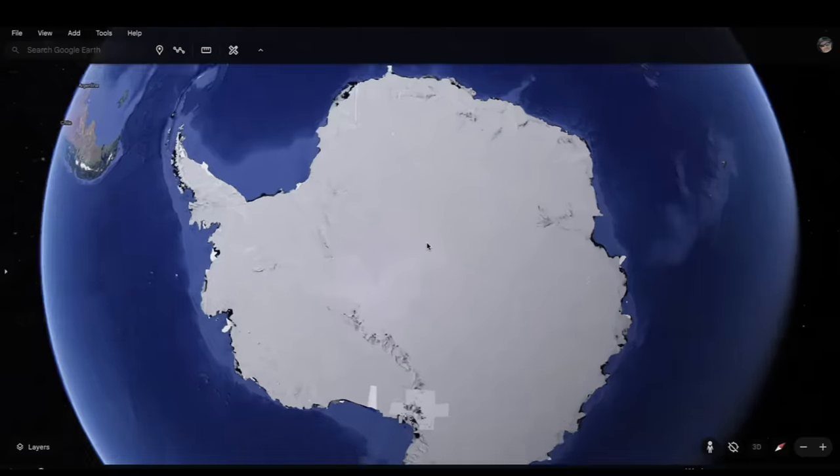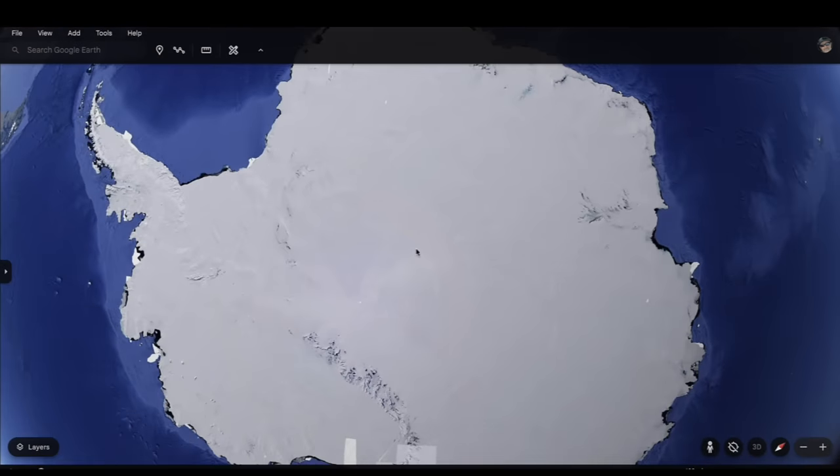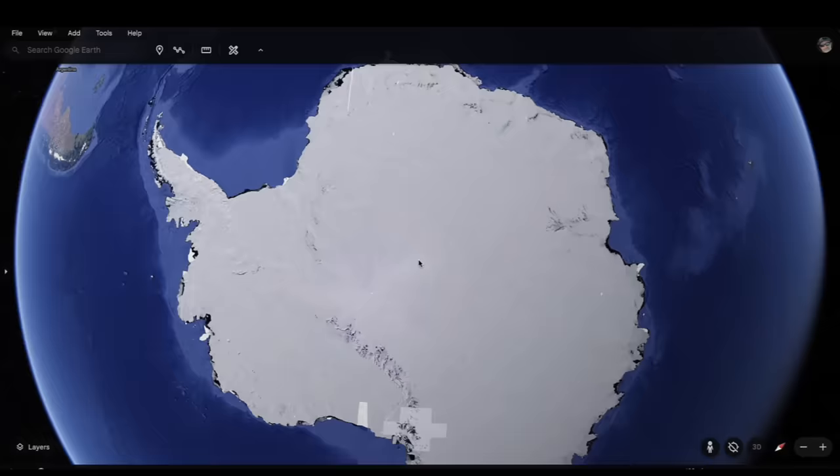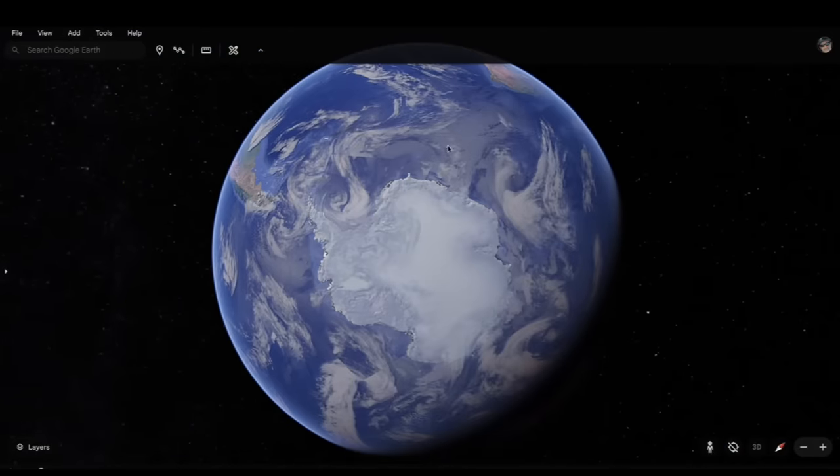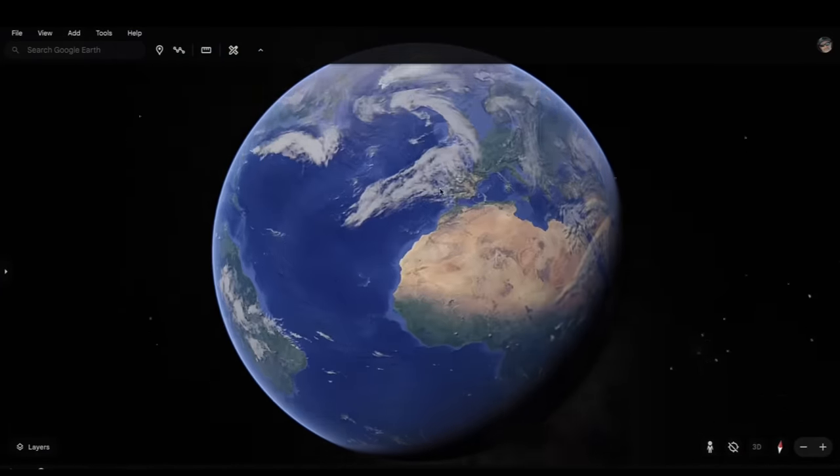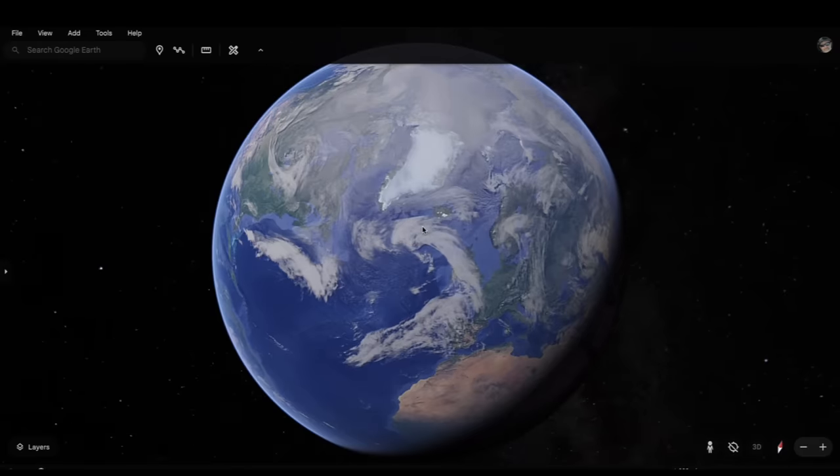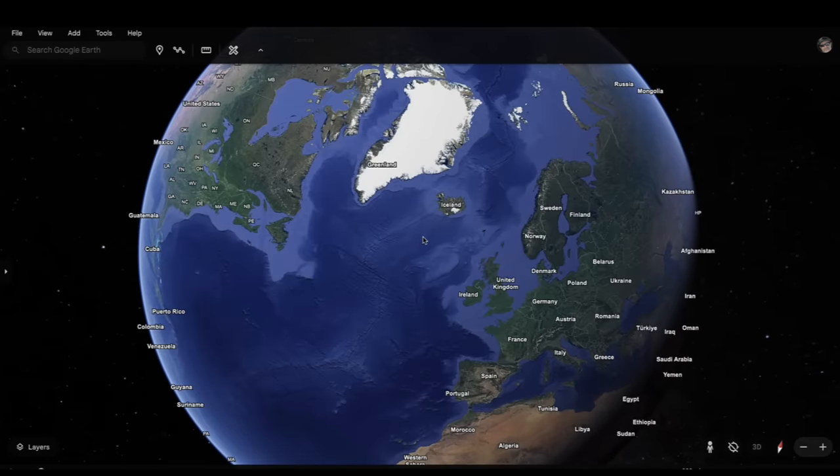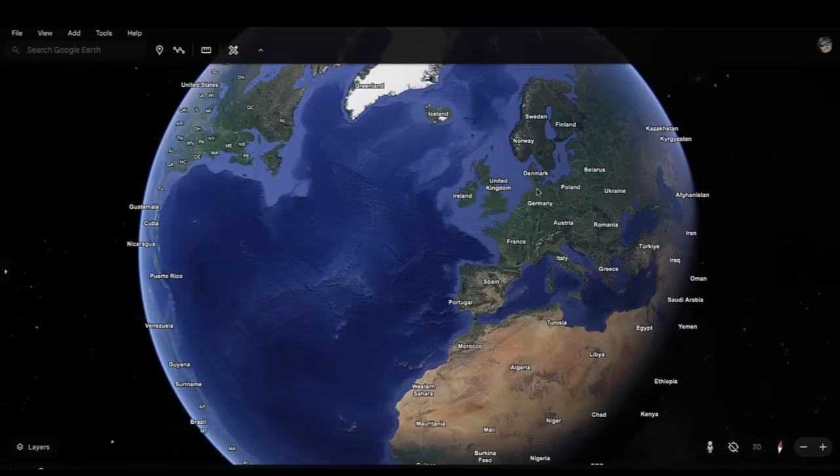Supposedly according to some theories there's an entrance down here in Antarctica that goes to the Earth's interior and there's also an entrance up here at the North Pole of the Earth that also goes to the interior of Earth. I was just curious as to what you guys possibly thought about those theories.